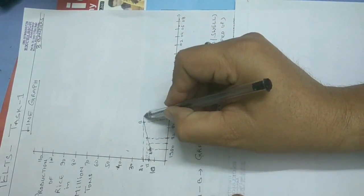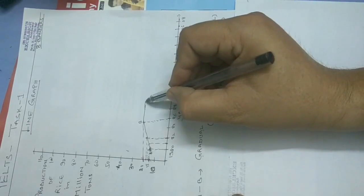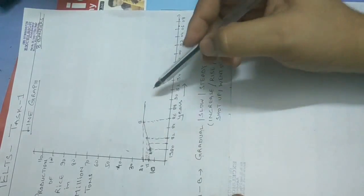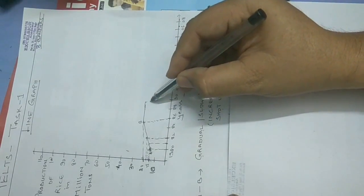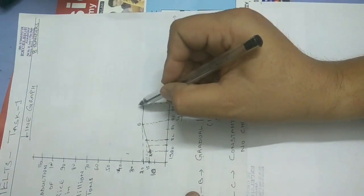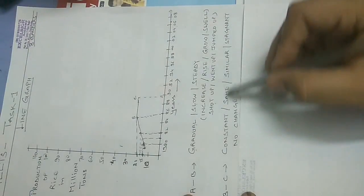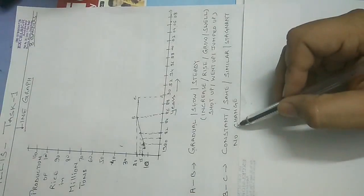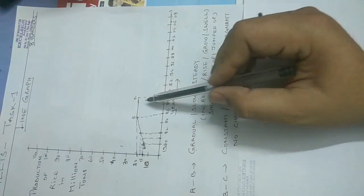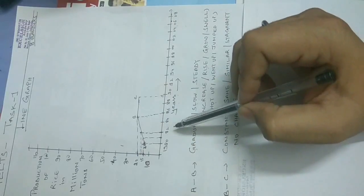From B to C there is a straight horizontal line. At point B it is around 20, in 1988 it is again 20, and in 1990 it is again 20. Since there is no change, we call this production constant, same, similar, or stagnant. We can also use the phrase 'no change' — for example: after 1986 there was no change in production, or the production remained constant between 1986 and 1990.